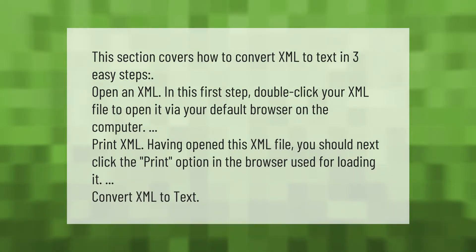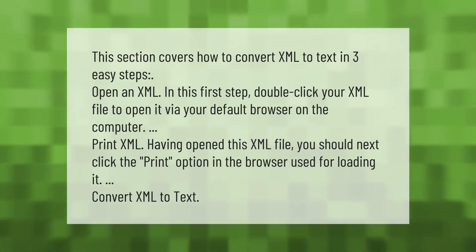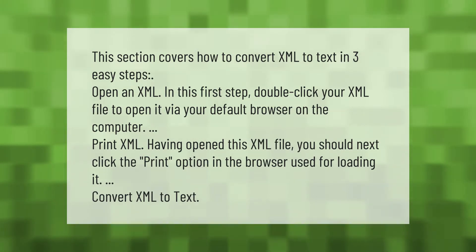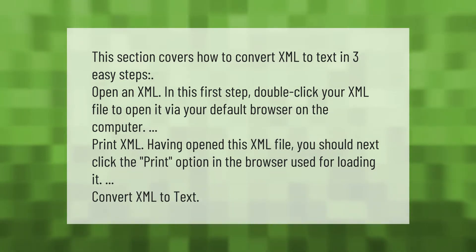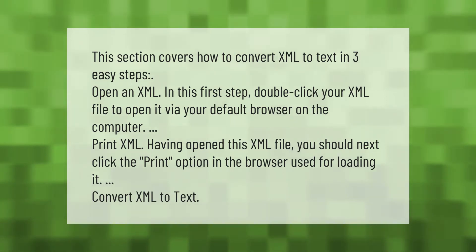This section covers how to convert XML to text in three easy steps. Step 1: Open an XML file — double-click your XML file to open it via your default browser. Step 2: Print XML — having opened the XML file, click the print option in the browser used for loading it.